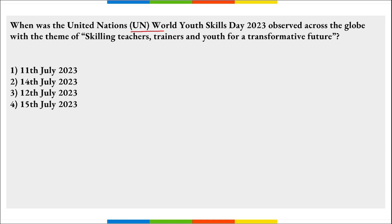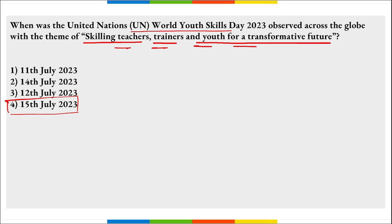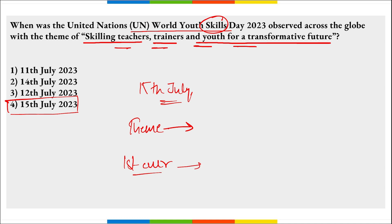When was UN World Youth Skills Day observed? On 15th of July, World Youth Skills Day was observed with the theme 'Skilling Teachers, Trainers and Youth for a Transformative Future.' The first ever World Youth Skills Day was observed on 15th July 2015.